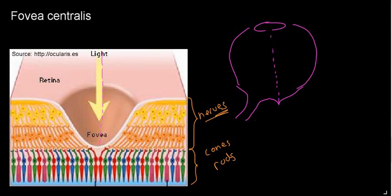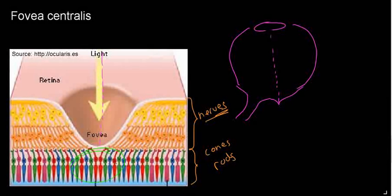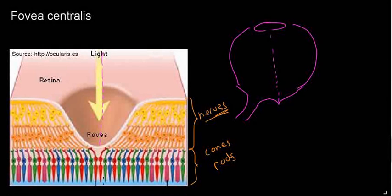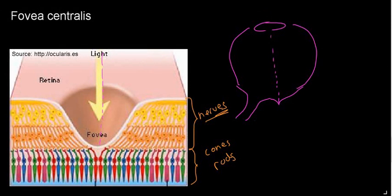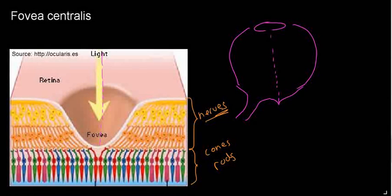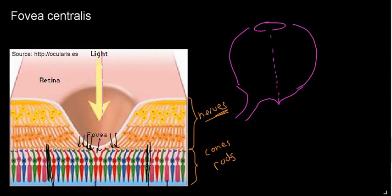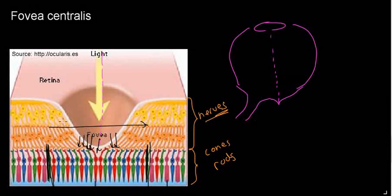What you see right away is that if these are our rods — the ones without a point — we don't see any in the middle of the fovea. We just see cones: red cones, green cones, blue cones. The next rhodopsin you encounter is going to be off the fovea, far away.